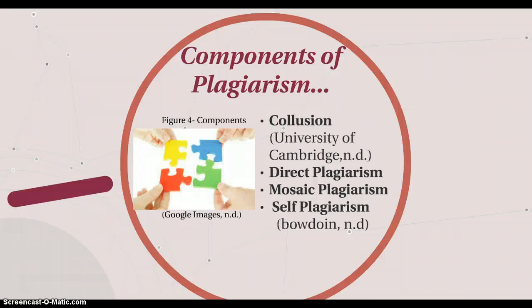The first type of plagiarism is collusion. According to the University of Cambridge, this involves students working on assignments together by sharing ideas or opinions on a particular subject when the lecturer does not want them to. This is seen as plagiarism as by working together the student is not producing their own work.